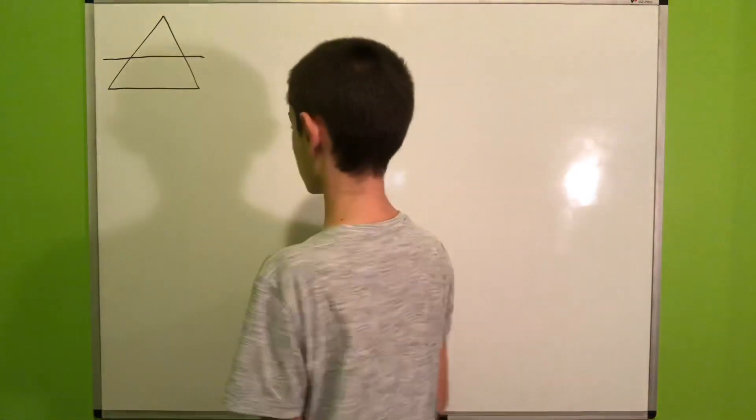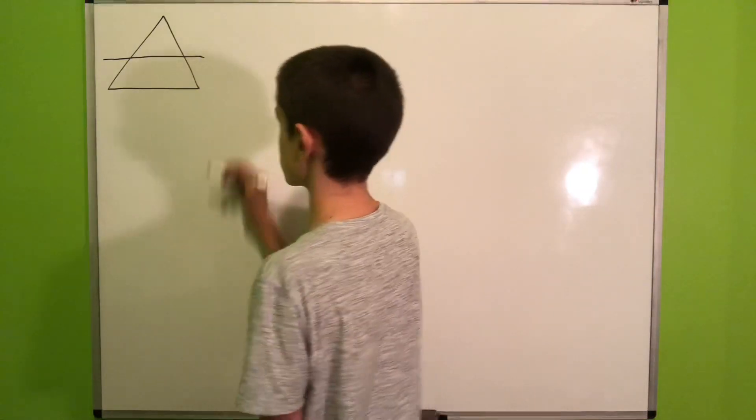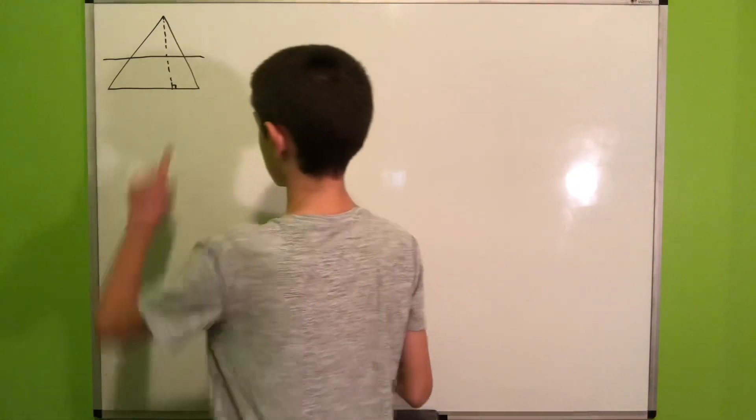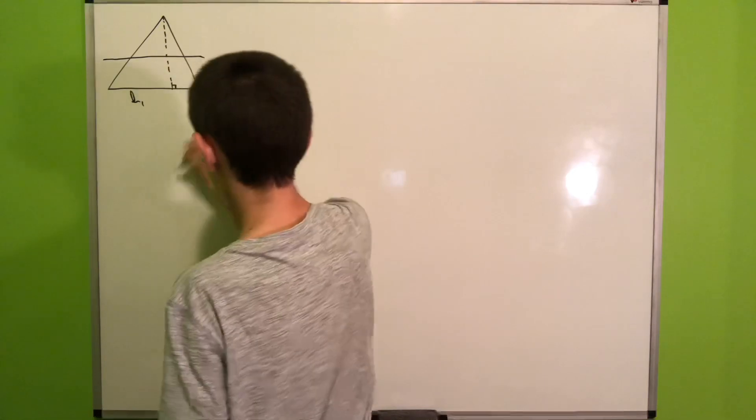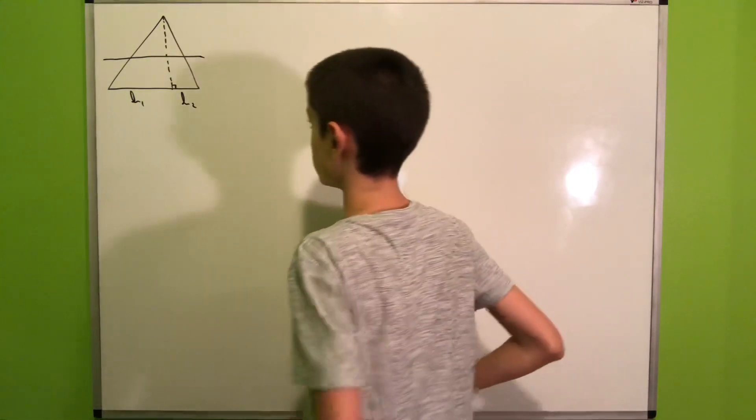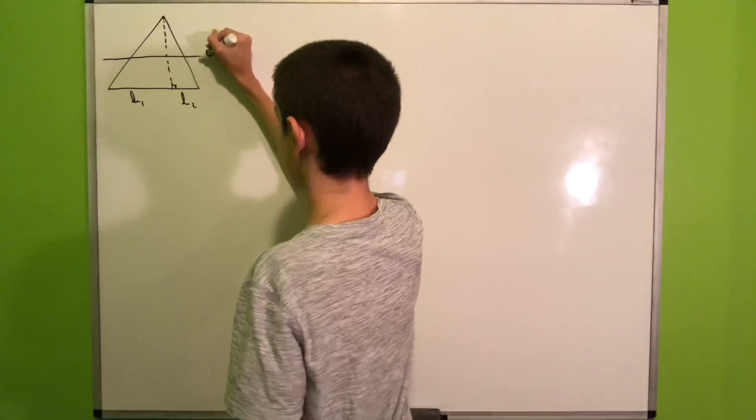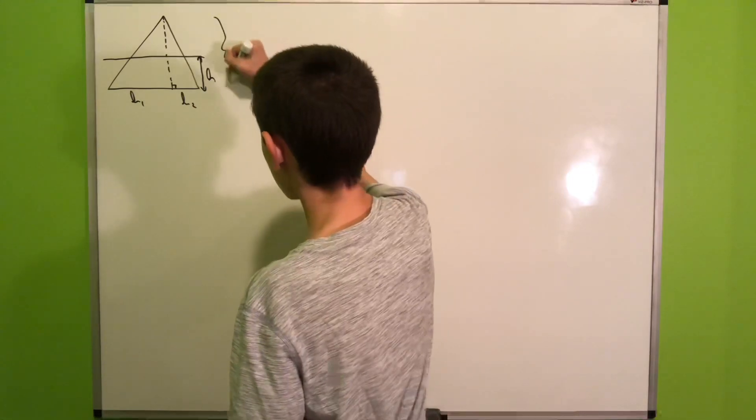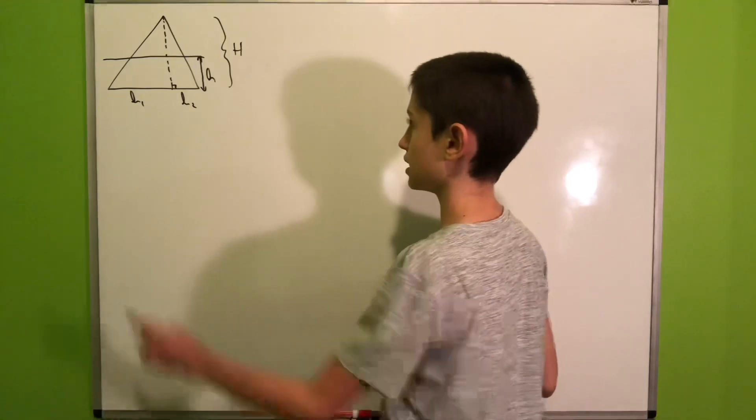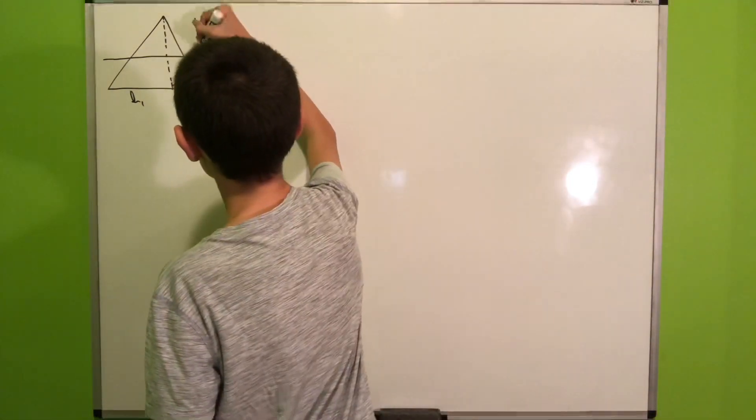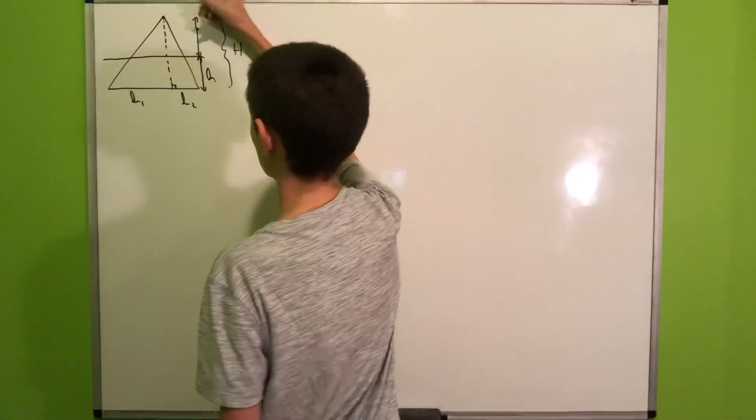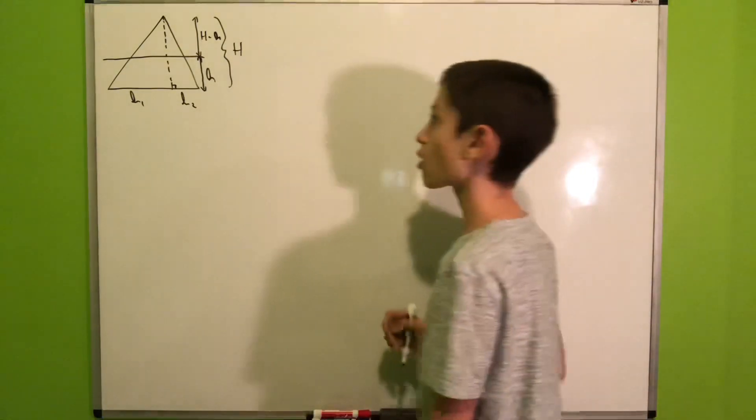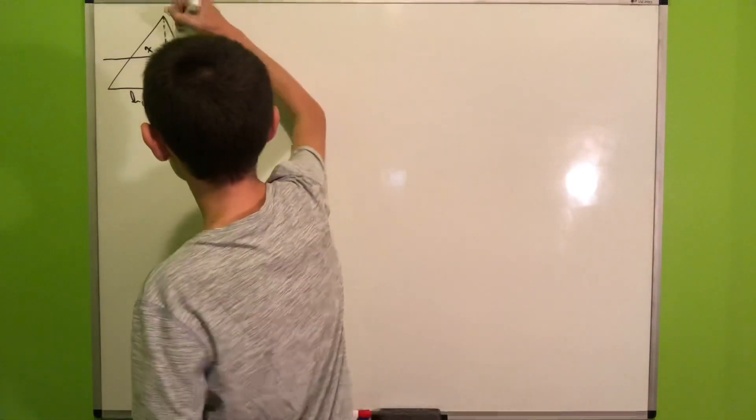First we will drop a height from the opposite vertex down to the base and label this as b1 and b2 for base 1 and base 2. We'll call this distance that we want to find h, and we'll call the height of the whole triangle capital H, which means that this right here will be capital H minus lowercase h.